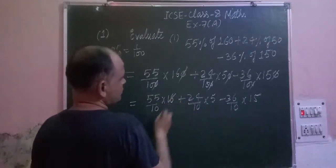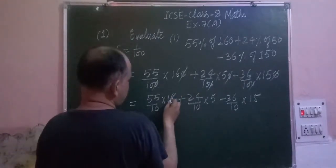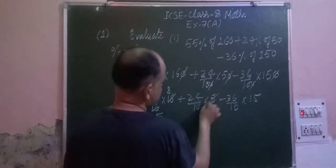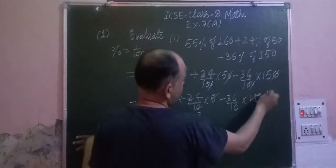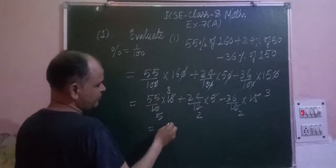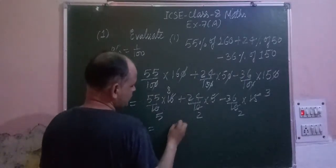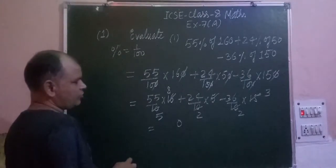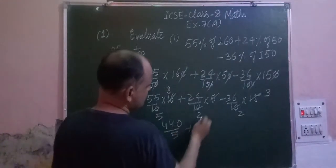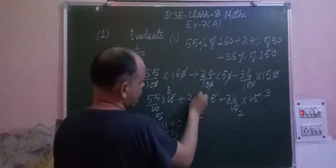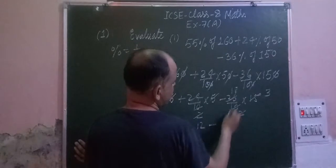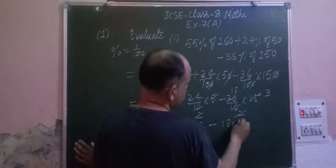So we simplify: 2 into 8 is 16, 2 into 5 is 10, and 5 into 3 is 15. After simplification we get 8 into 5 is 40, giving us 44 upon 5 plus this is 12.